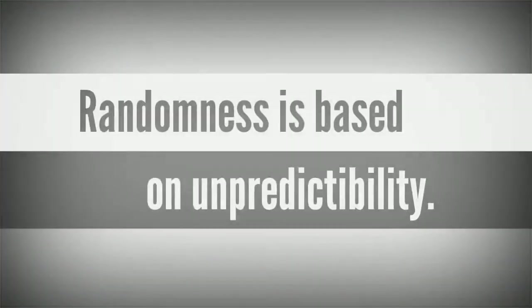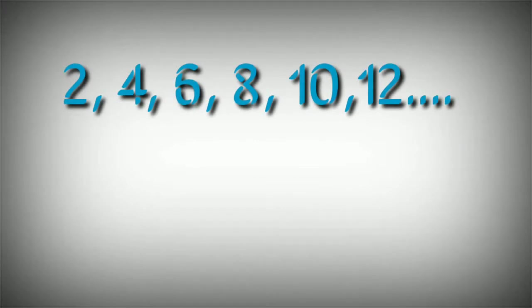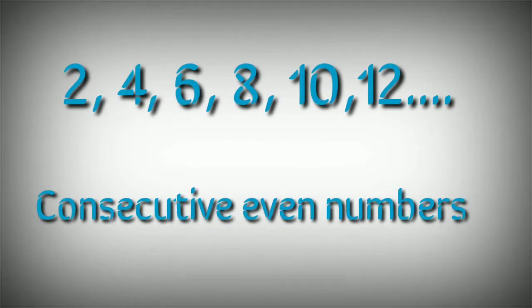So randomness is completely based on unpredictability. There must not be any pattern in a random number series, for example 2, 4, 6, 8, 10, 12. These numbers are not random at all because these are all consecutive even numbers.